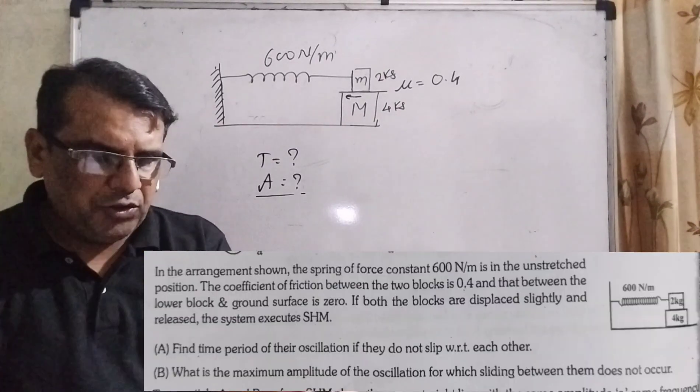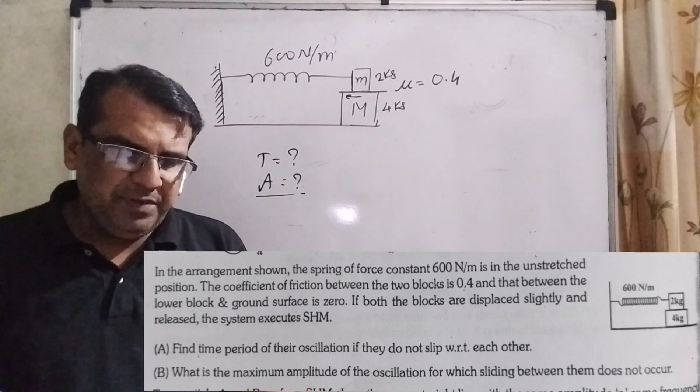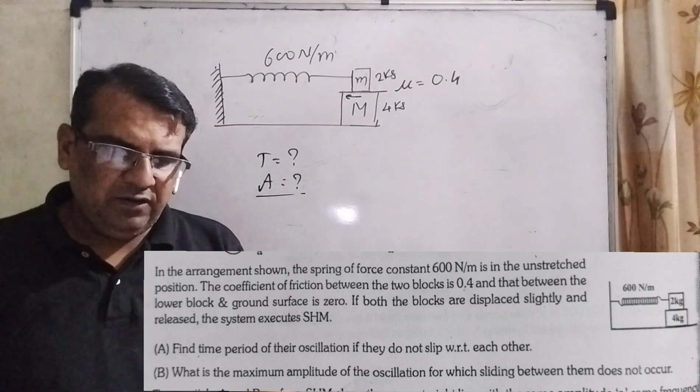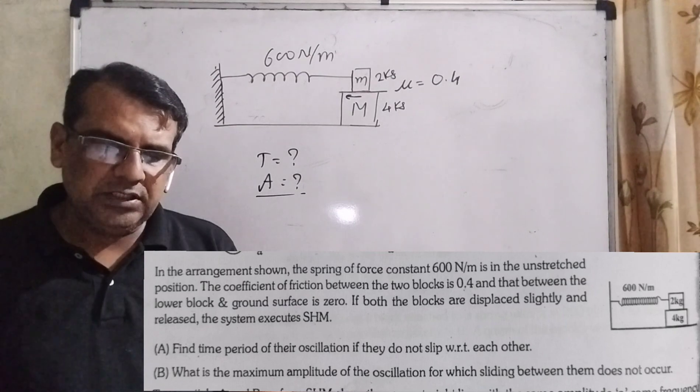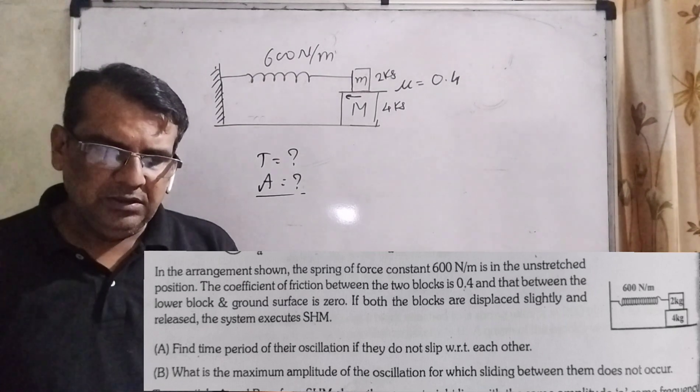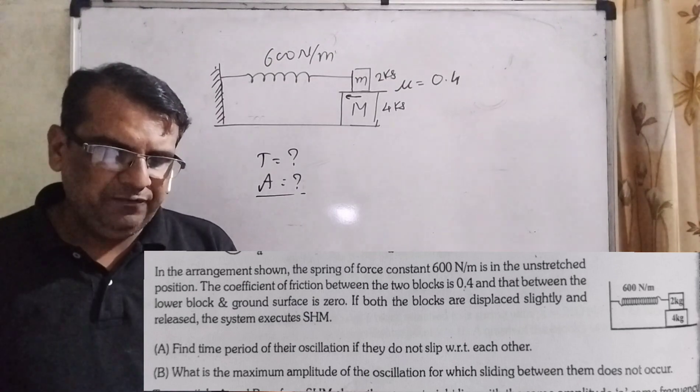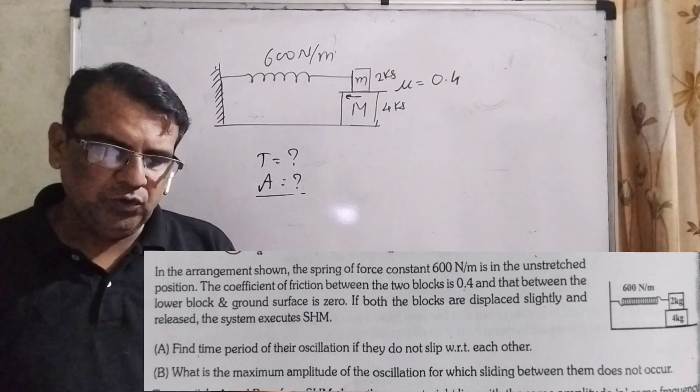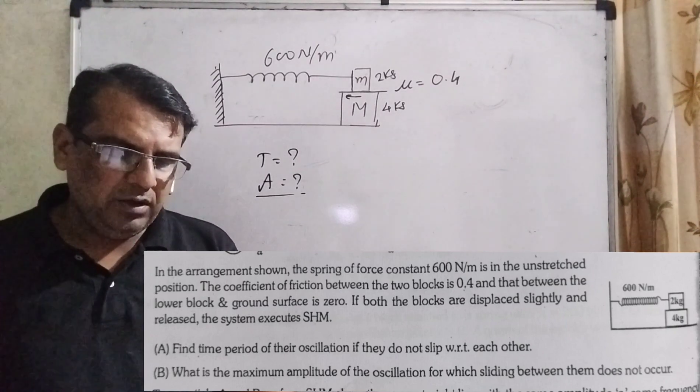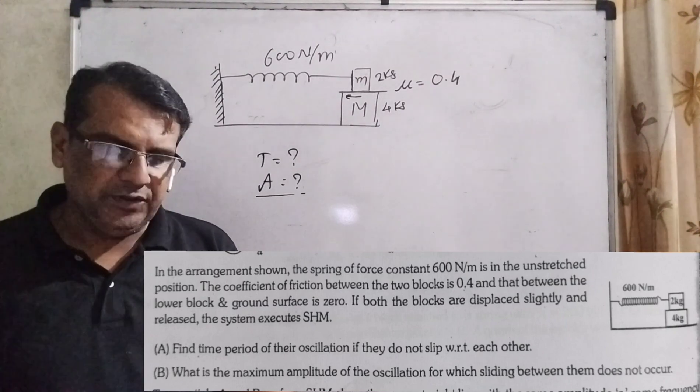Here, the question says: In the arrangement shown, the spring of force constant 600 Newton per meter is in the unstretched position. The coefficient of friction between the two blocks is 0.4, and that between the lower block and ground surface is 0.